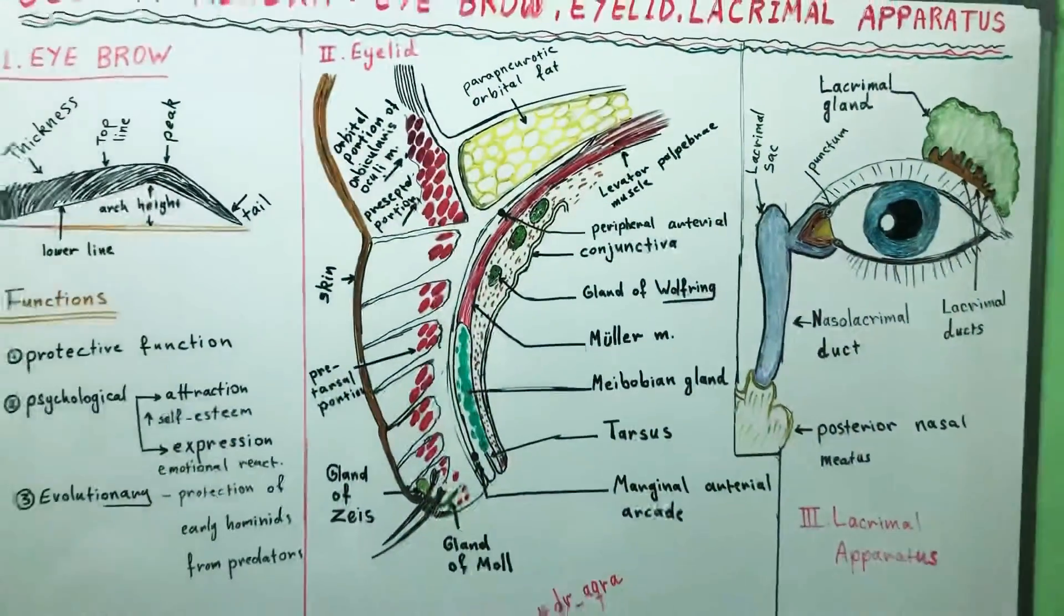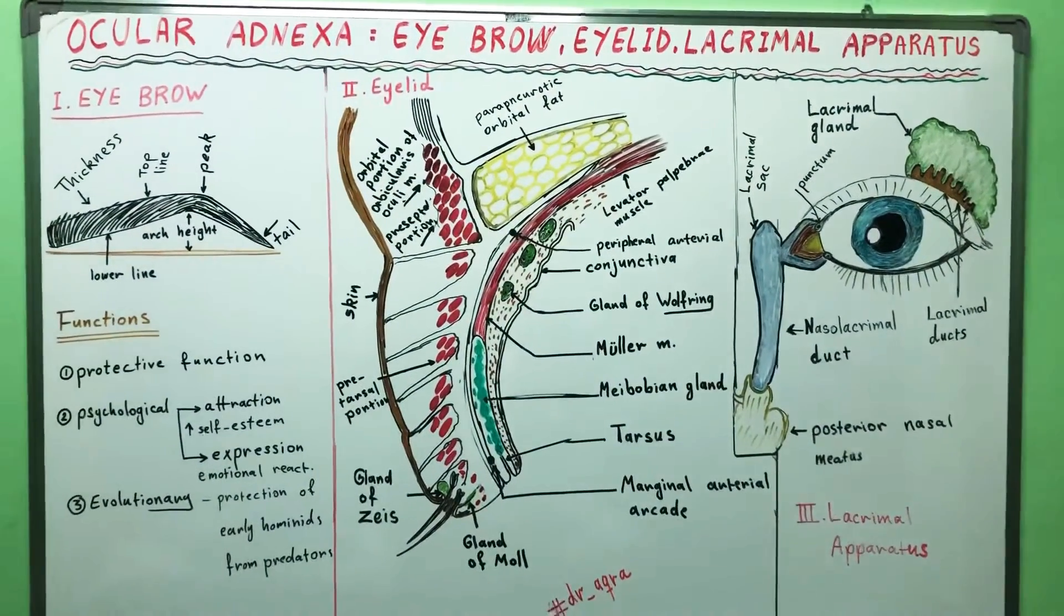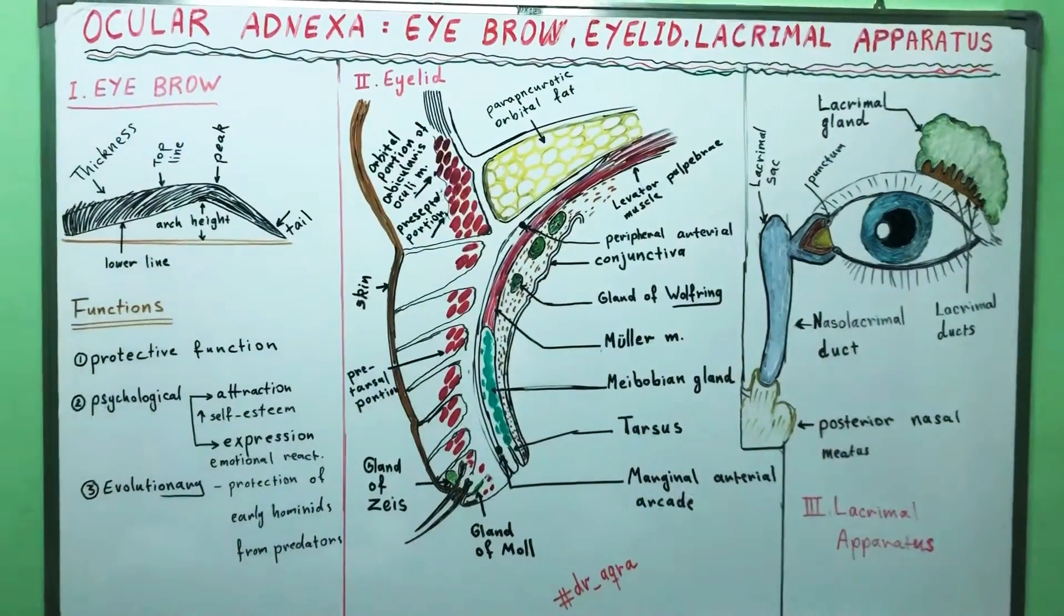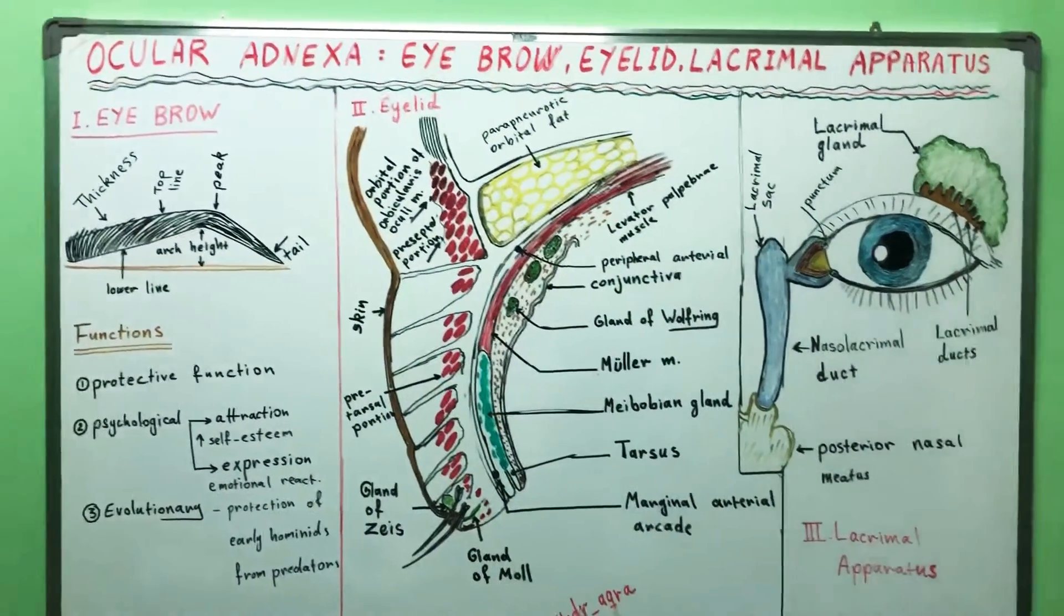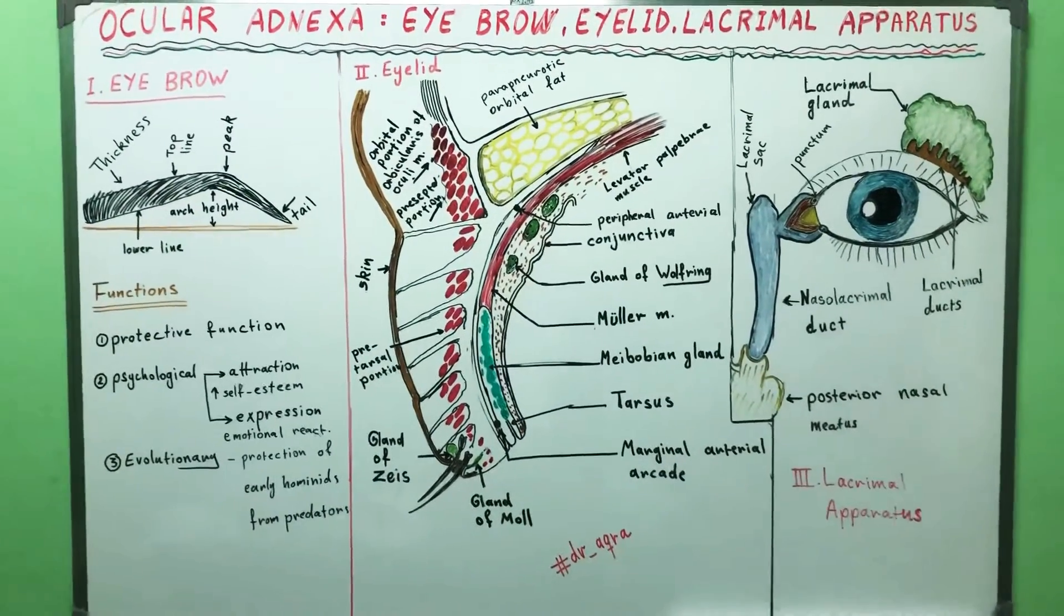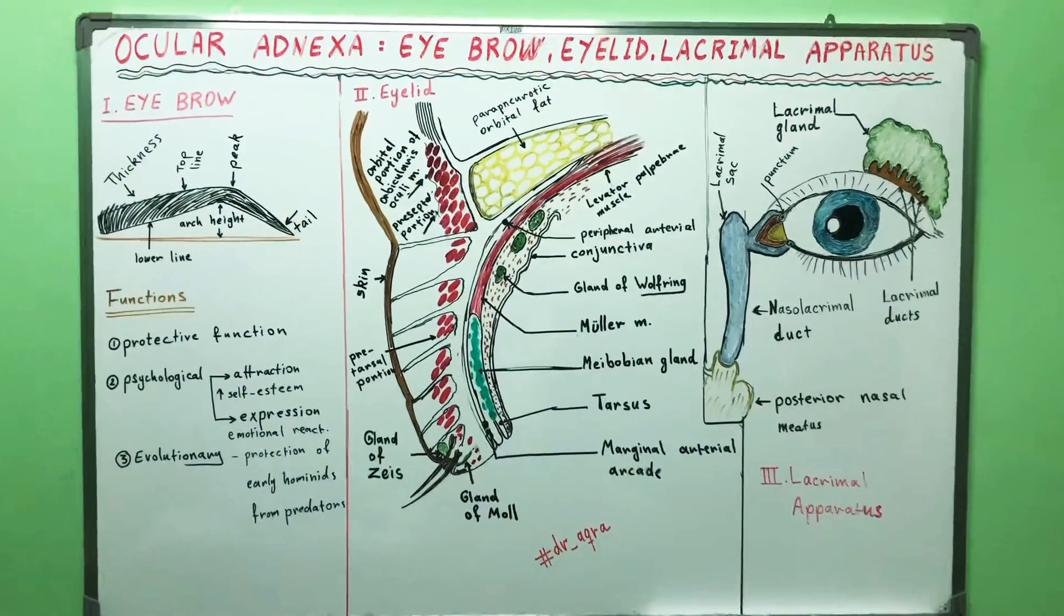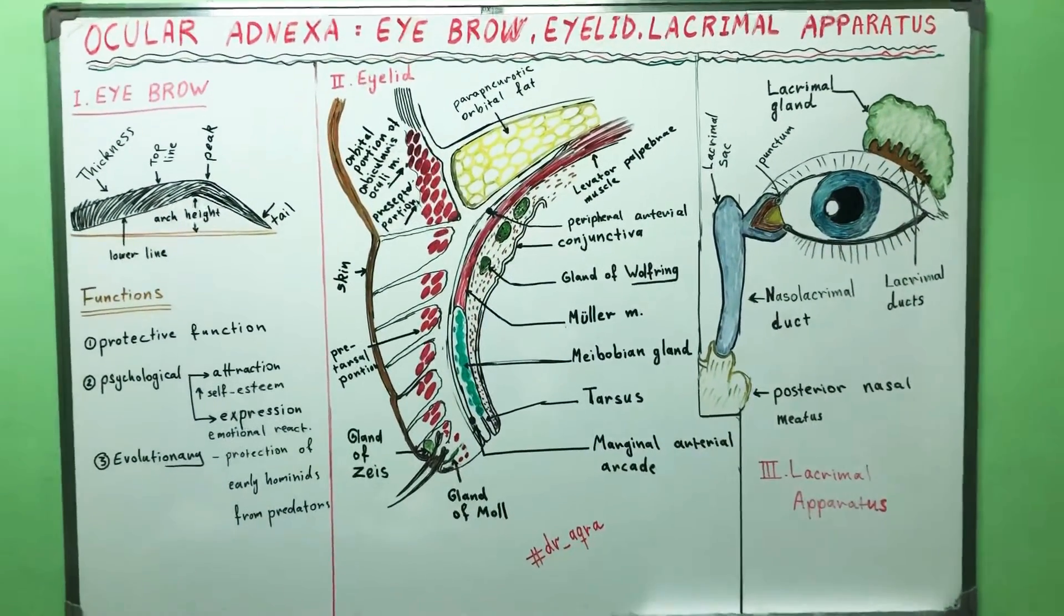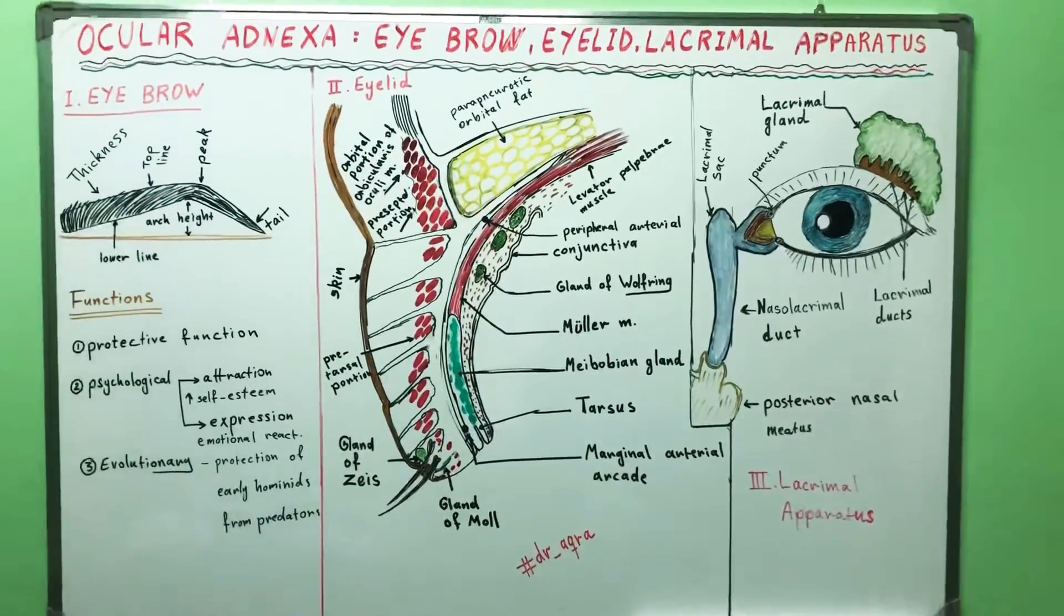The aqueous humor wash the eye and nourishes the cornea, the trabecular meshwork and the other avascular structure in the anterior cavity of the eye. The lipid layer prevents the evaporation of tears while the mucus contributes to the distribution of tears in the eye.